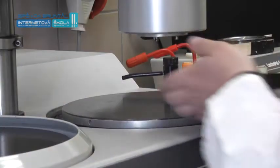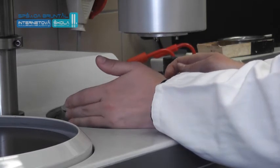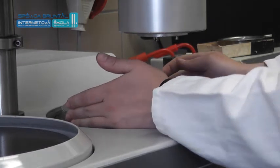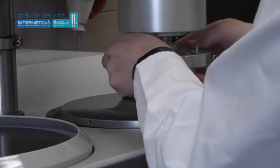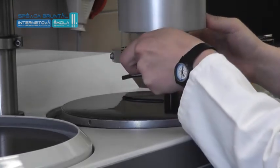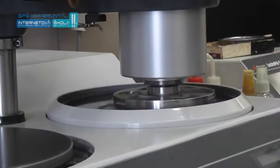Small samples are embedded in blocks using suitable materials - synthetic resins - enabling mechanical processing by grinding, then polishing to high gloss with subsequent etching. Etching makes the structure visible.